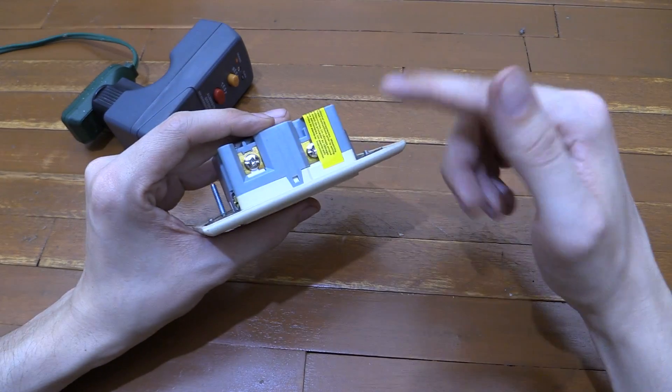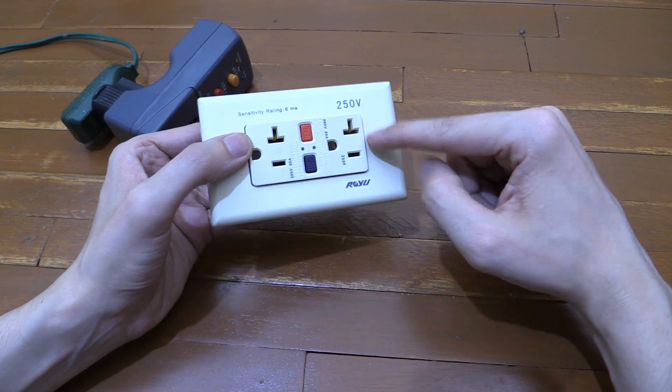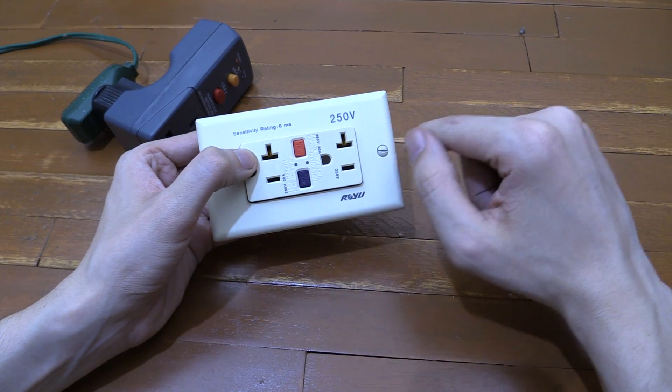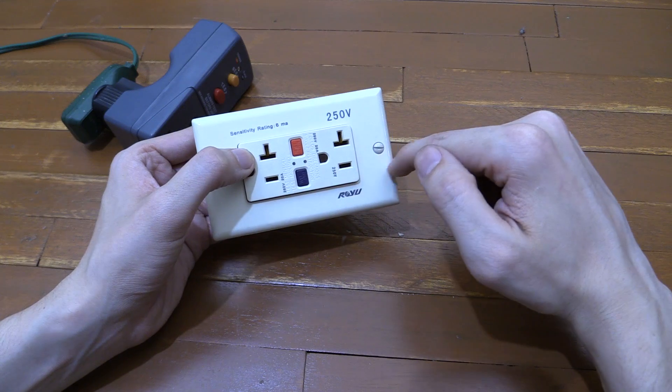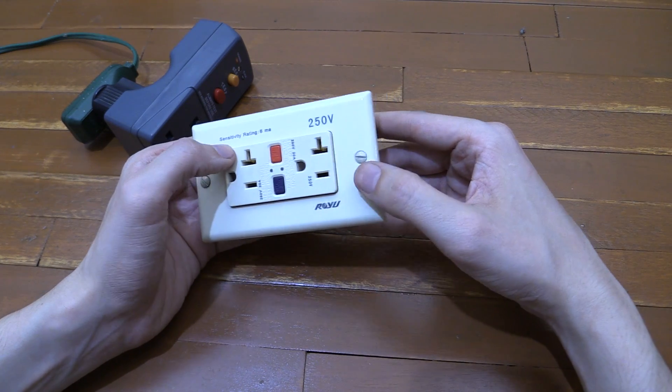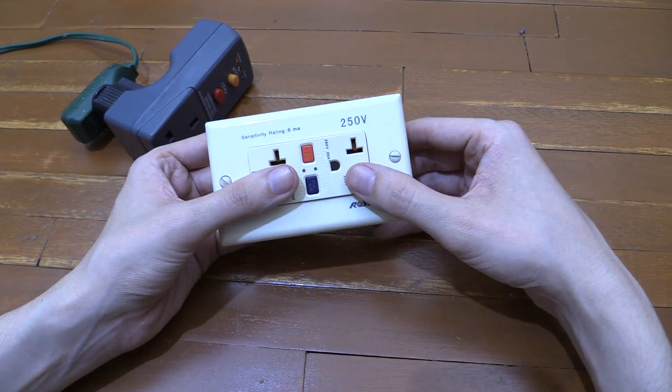Now there are some limits, you have to read the instructions for that, but basically you can connect multiple sockets to this so you buy one of these. Of course one downside of that is if you've got a lot of sockets running off this and then it trips, everything that's plugged into all of the sockets are going to be disconnected immediately. So if you can afford it, you're probably better off installing more of these rather than daisy chaining too many.